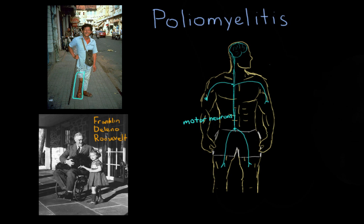His muscles in his right leg have atrophied — in other words, they've lost their muscle tone and shriveled up. Without any input from the motor neurons, they just shrivel up.